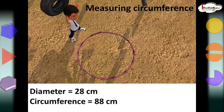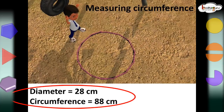You know, the perimeter of the circle is also known as the circumference of the circle. So, we can say the circumference of the circle was almost 88 cm.